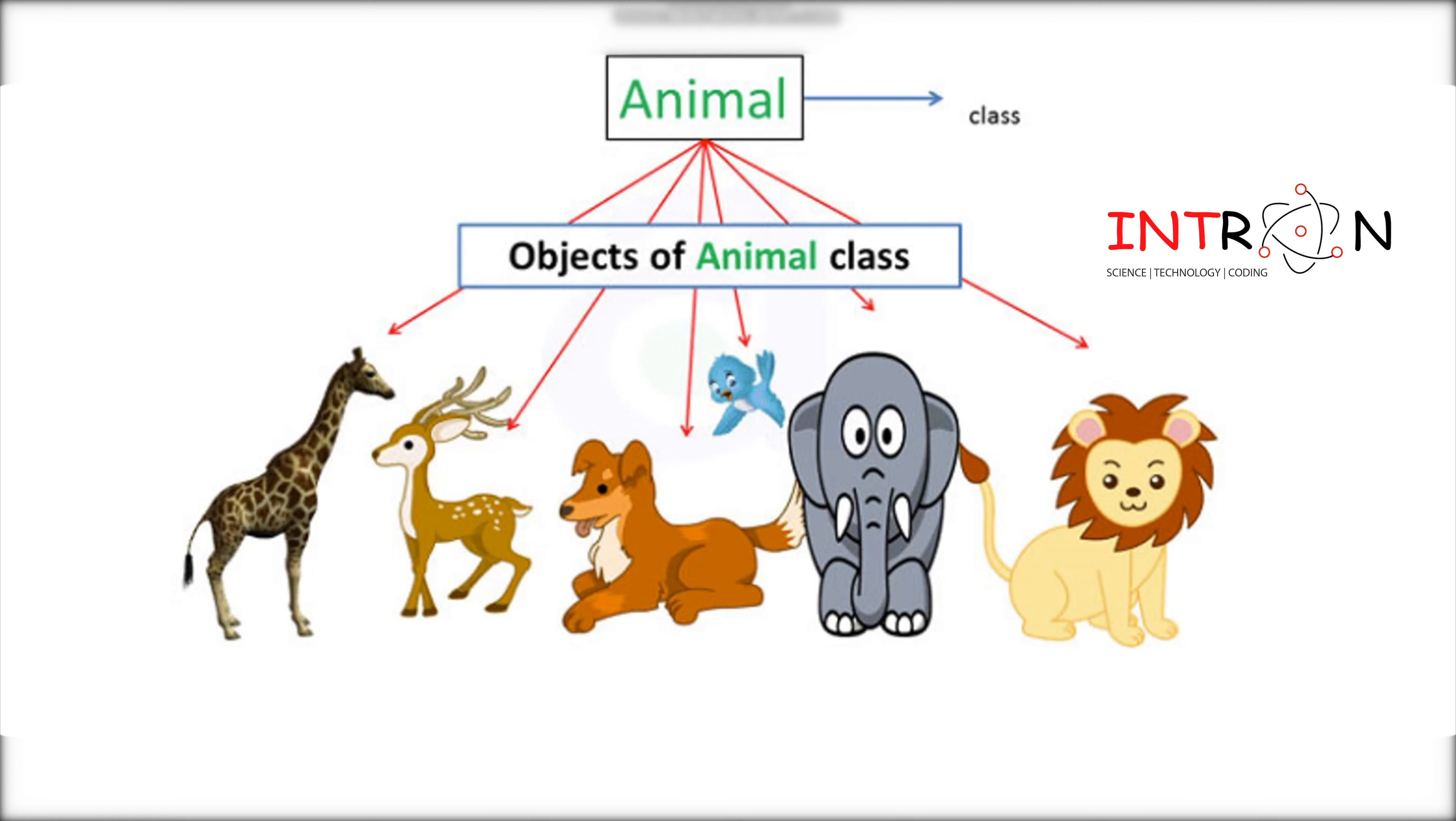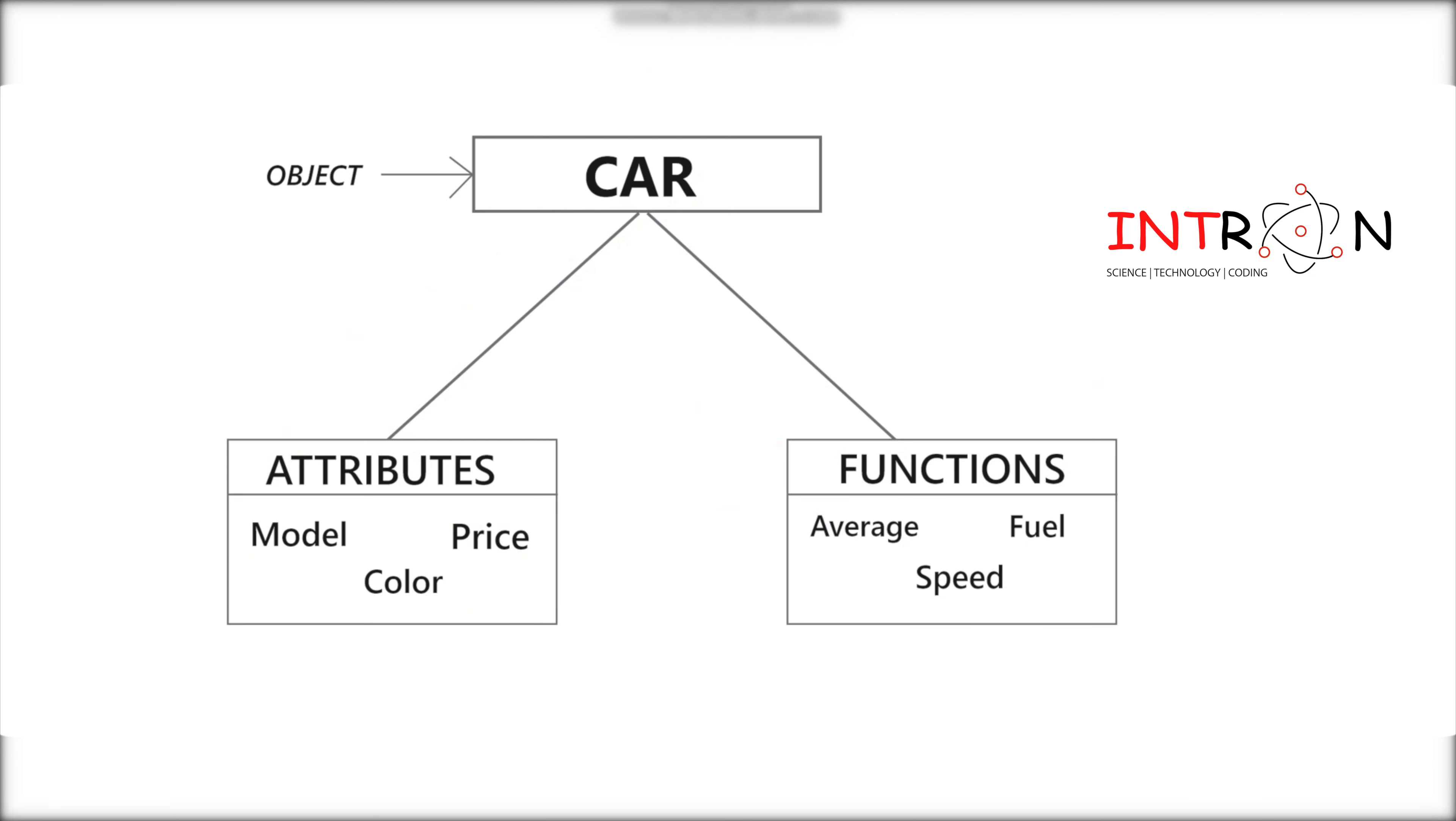Now we will consider here object as a car. Car, it can be any car. Suppose here I will consider now as a Toyota car, so Toyota car is my object. There are many cars with different names and brands, but all of them will share some common properties like they will have four wheels, speed, mileage, or speed limit.